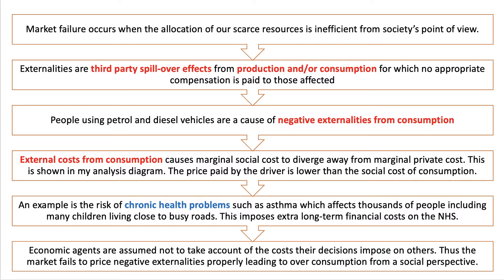You could make a case for saying that there are externalities from production if you're looking at transport services, but let's just think about people using their cars. They're going to cause negative externalities from consumption, and those external costs are going to cause the marginal social cost of using those vehicles to diverge away from — indeed above — the marginal private cost. I'll build that into my analysis diagram.